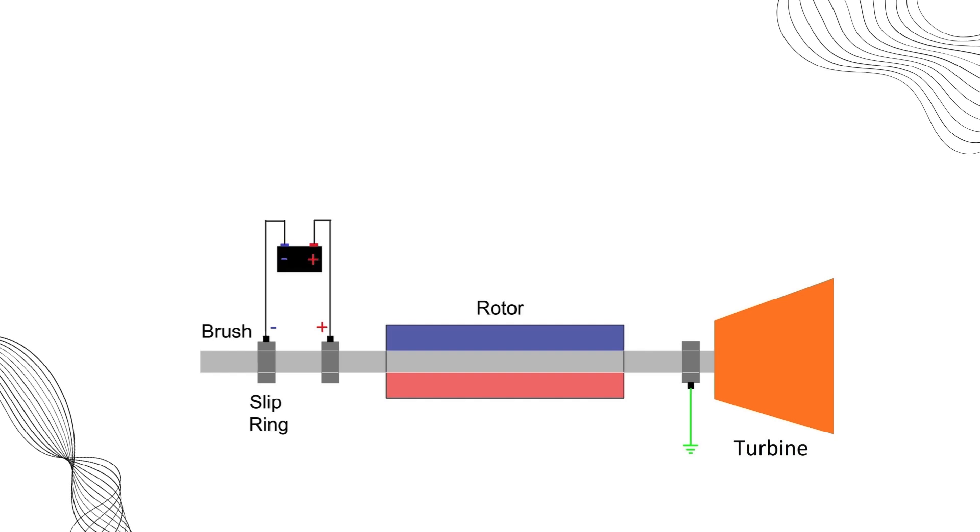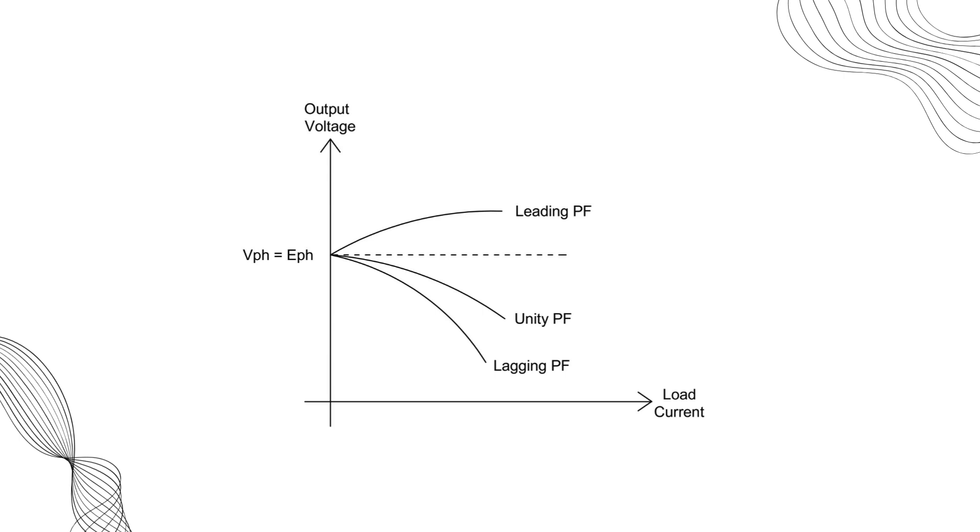But here's the question: why do we need a complex excitation system? Why can't we just use a battery to supply DC to the rotor field? The answer is that the load on the generator isn't constant, it's always changing. And with it, the output voltage varies as well.